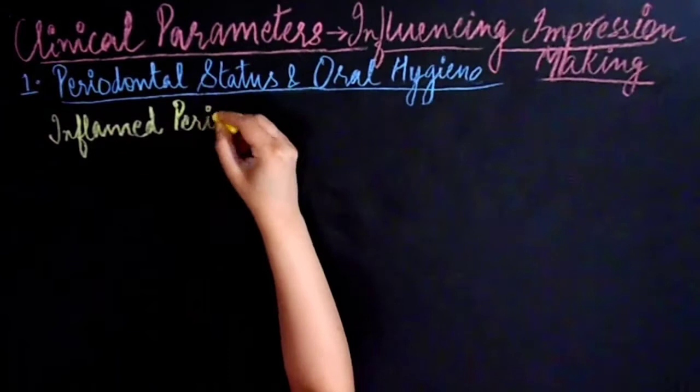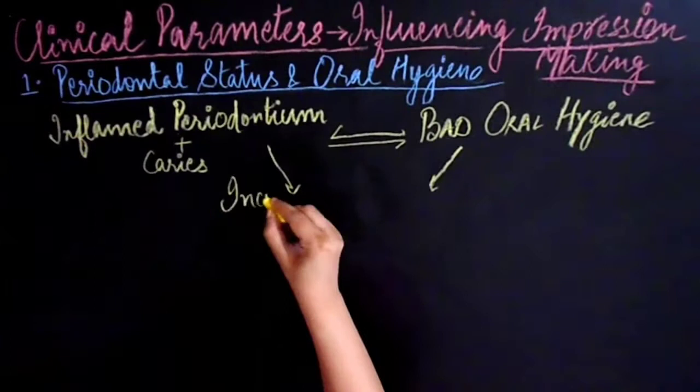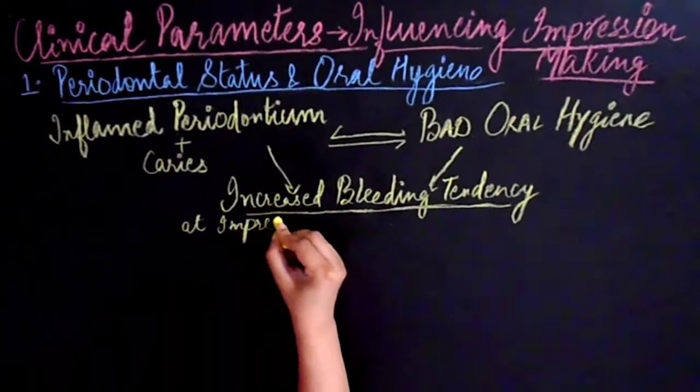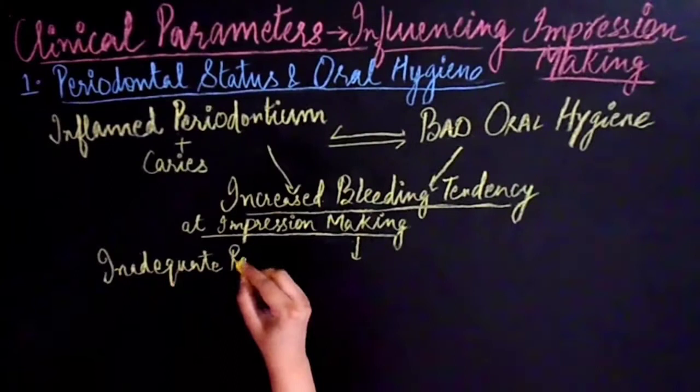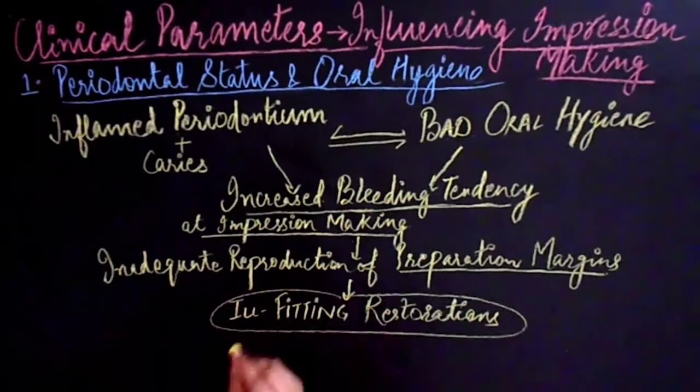The periodontal and oral hygiene status of the patient significantly affects the result of an impression. Inflamed periodontium and caries are connected to poor oral hygiene and inevitably result in sulcular bleeding during impression making, which further results in inadequate reproduction of the preparation margins. This means the preparation margins are inadequately reproduced and result in ill-fitting restorations.